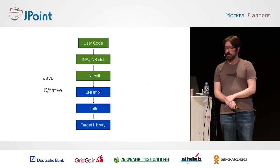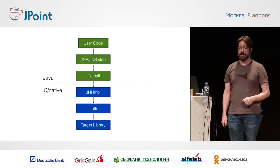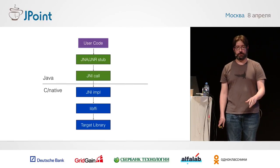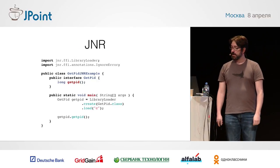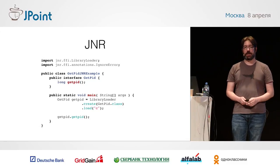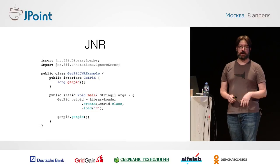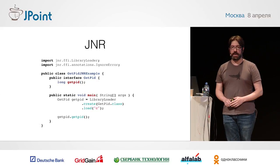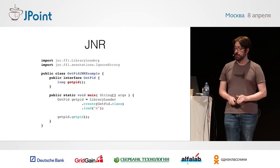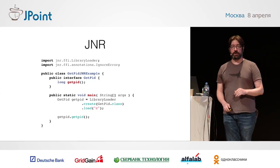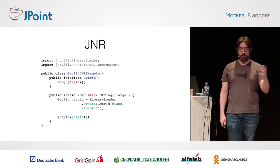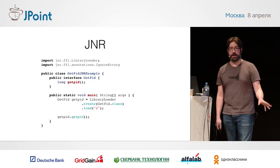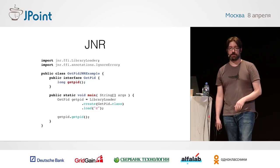Here is the actual getPID implementation using JNR FFI. We have our interface where we define the function prototype for the getPID function — it returns a long value on most platforms. We have our library loader create a new instance of getPID hooked up to the C library, and then we call it. That's it. There's no C code involved, no makefiles, no gnarly command line to build this. This is all you need to call out to a C library with JNR.